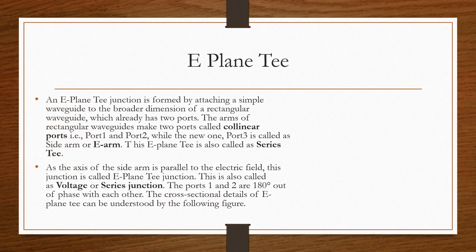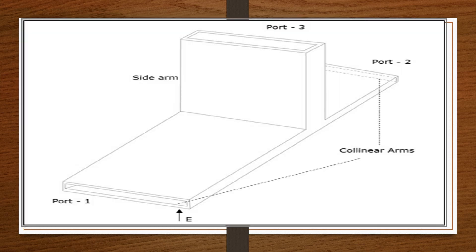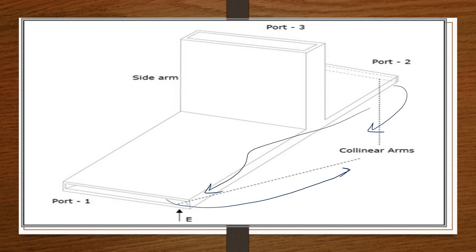E-plane T is a junction formed by attaching a simple waveguide to the broader dimension of a rectangular waveguide, which has two ports — port 1 and port 2 — both are collinear ports. This is one waveguide attached with another. This is called the sidearm or E-arm. It is also called a series and voltage junction.